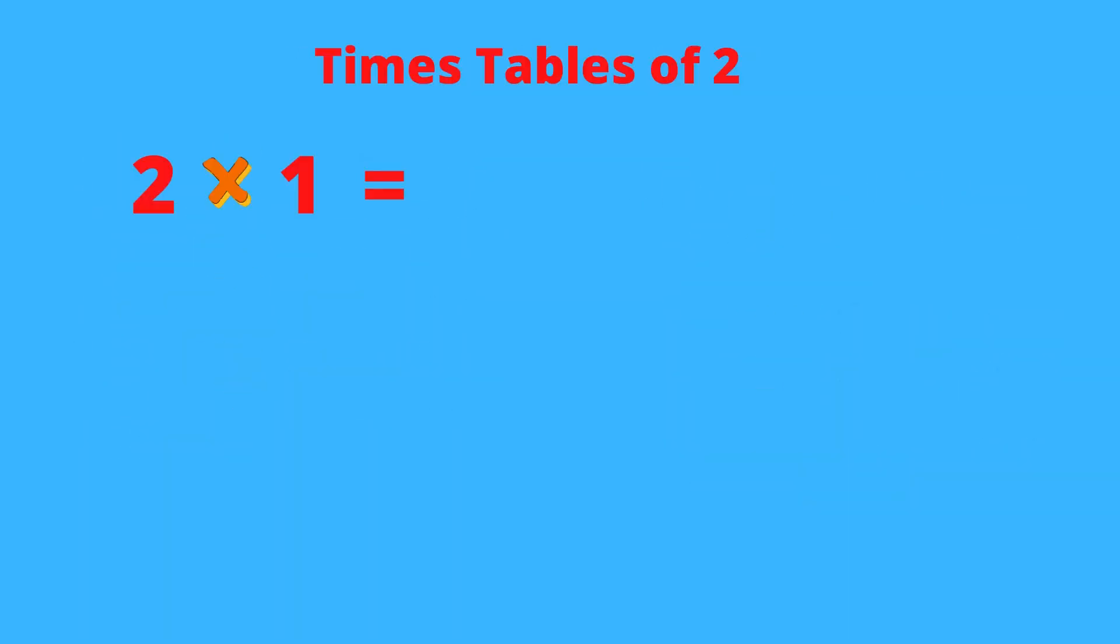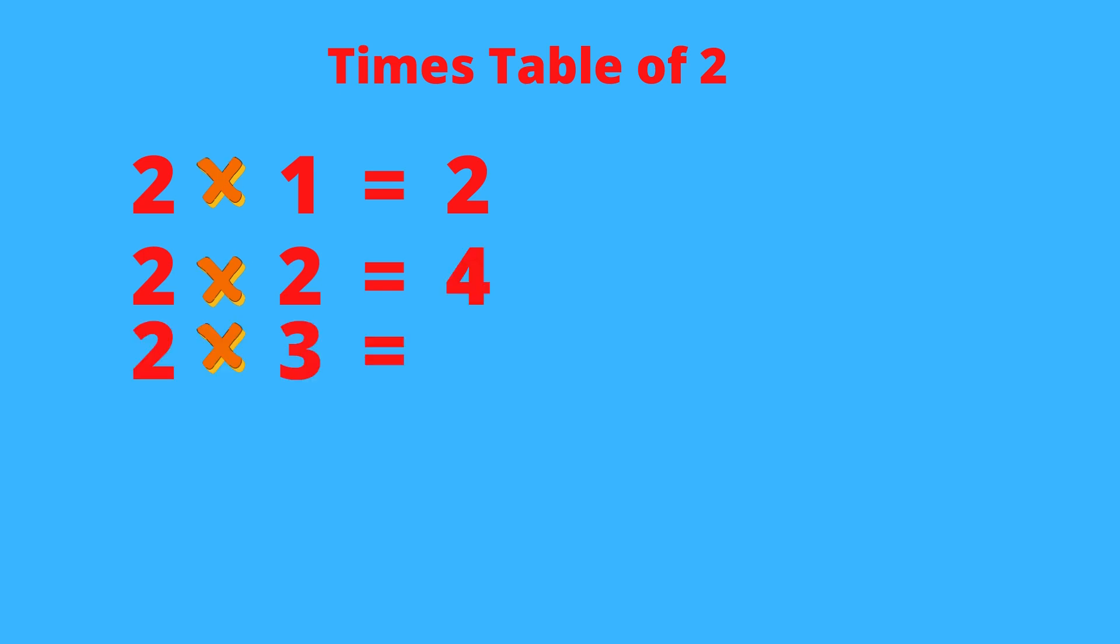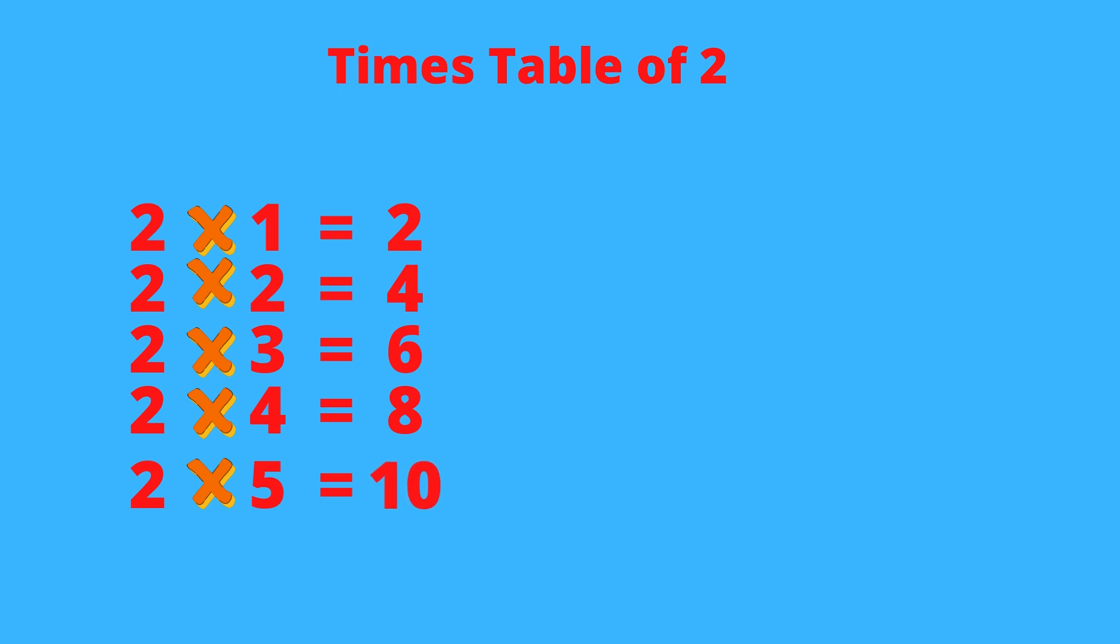Let's start. 2 times 1 equals 2, 2 times 2 equals 4, 2 times 3 equals 6, 2 times 4 equals 8, 2 times 5 equals 10.